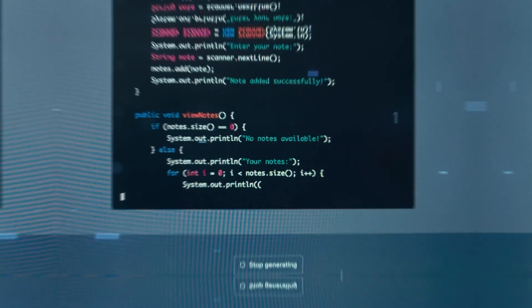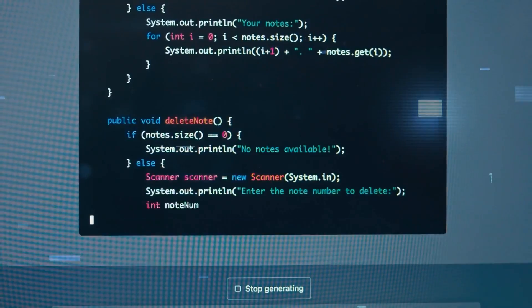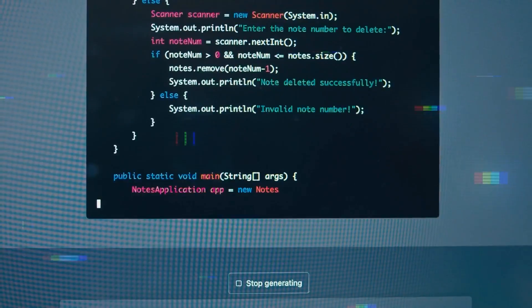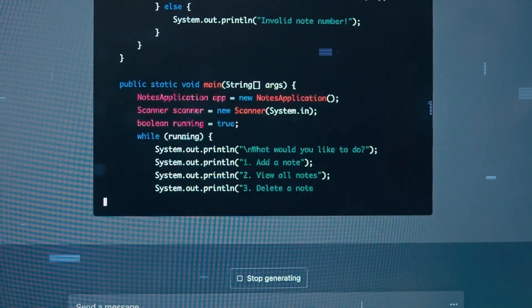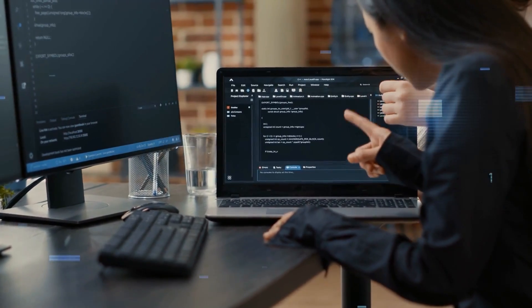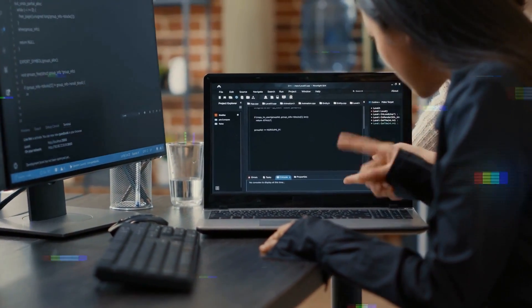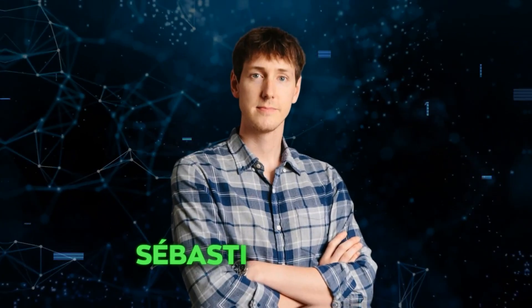Nick Rider from OpenAI highlights that scoring well on a test doesn't mean a model thinks like a human. OpenAI's results are only about how the model does on that specific task, not about it being similar to human thought. Other researchers have studied GPT-4's abilities beyond just language.